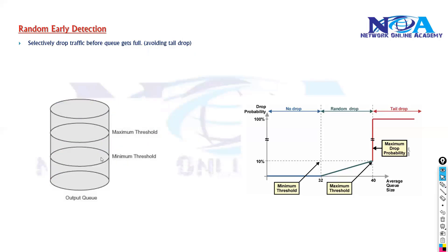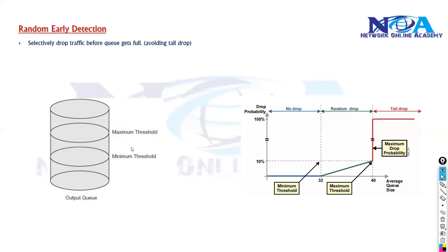The main reason for implementing Random Early Detection is to overcome TCP issues — specifically TCP synchronization and starvation issues that are caused by tail drop. RED drops packets based on the configured threshold values: a minimum threshold and a maximum threshold. Once queue depth goes beyond this limit, it starts dropping traffic before the queue becomes full.